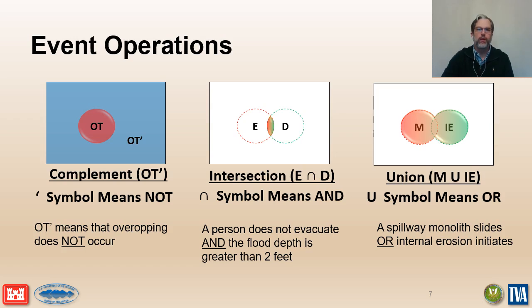The union of two or more events means that the events can occur individually or together. The total risk estimate for a dam or levy comes from the union of two or more potential failure modes.